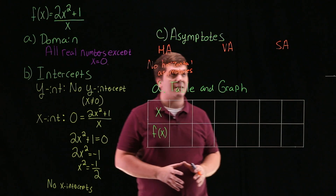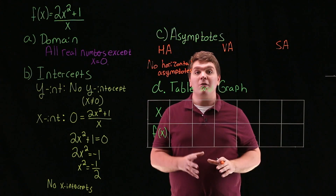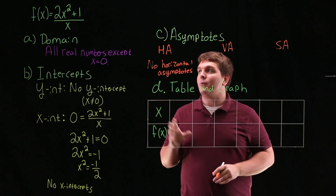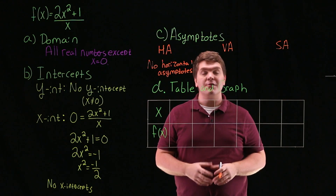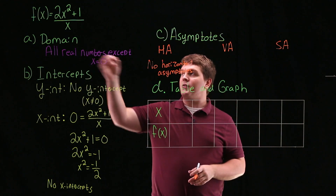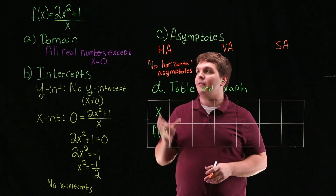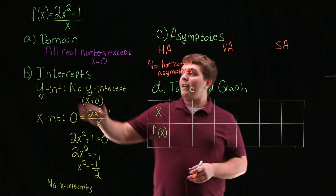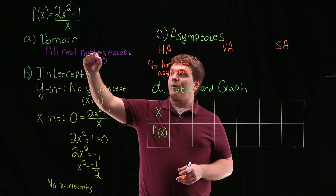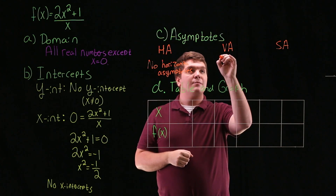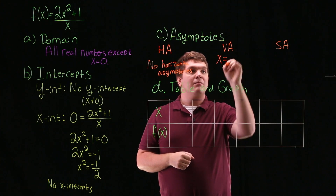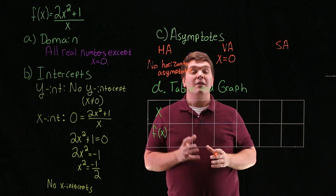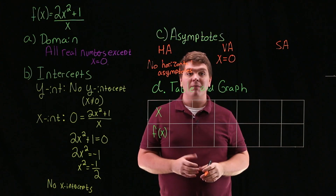Next, we'll talk about vertical asymptotes. Vertical asymptotes happen whenever we're dividing by 0 and when the numerator and denominator don't have any common factors. Looking at our function, the numerator and denominator don't share any common factors. So we're going to have a vertical asymptote when the denominator equals 0, which gives us x equals 0.